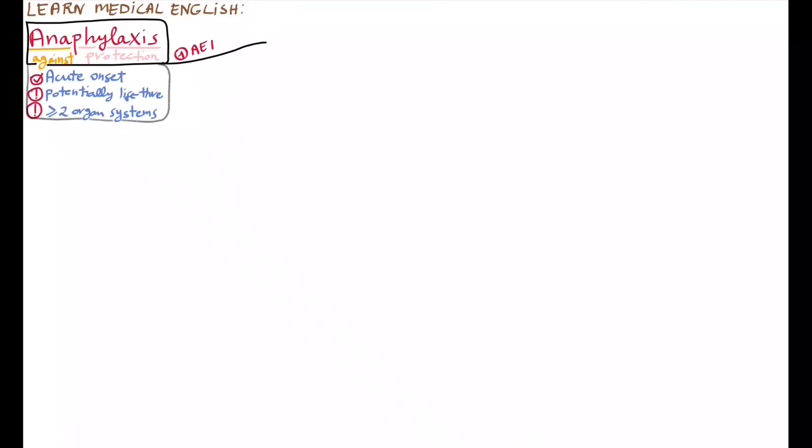To keep each video reasonably short, we'll simply split the etiology into more common and less common causes. Beware that anaphylaxis can occur in response to almost any foreign substance. Foods are the most common trigger in children and young adults, whereas insect bites and medications are more common in older adults.